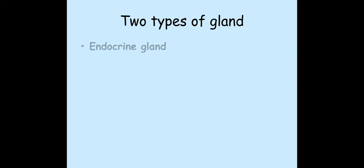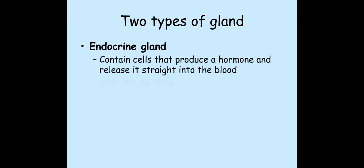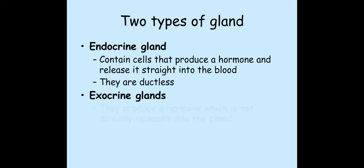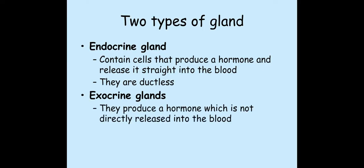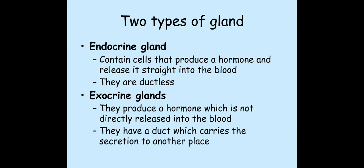There is another type: exocrine glands. An exocrine gland is the opposite — in an exocrine gland they do not release the hormone directly into the blood; they use ducts to carry the hormone to another place where it may be stored until it's needed.